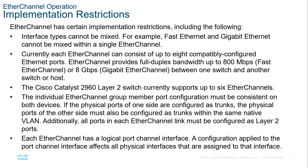What are some of the restrictions? Interface types cannot be mixed — you cannot have GigabitEthernet and FastEthernet; it needs to be one or the other. Each EtherChannel can only consist of up to eight compatibly configured ports. The Cisco Catalyst 2960 Layer 2 switch can only support six EtherChannel ports. Individual EtherChannel group member port configurations must be consistent, and each EtherChannel has a logical port channel interface that represents the overall group.